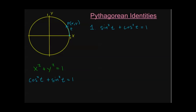Now after we have this first one, we can use it to find the other two. The way I'm going to find my next Pythagorean identity is I'm going to divide this first identity through by cosine squared. That means I divide every term by cosine squared — I'm dividing both sides by cosine squared. This gives me a whole new equation. Cosine squared over cosine squared — well that's just 1.